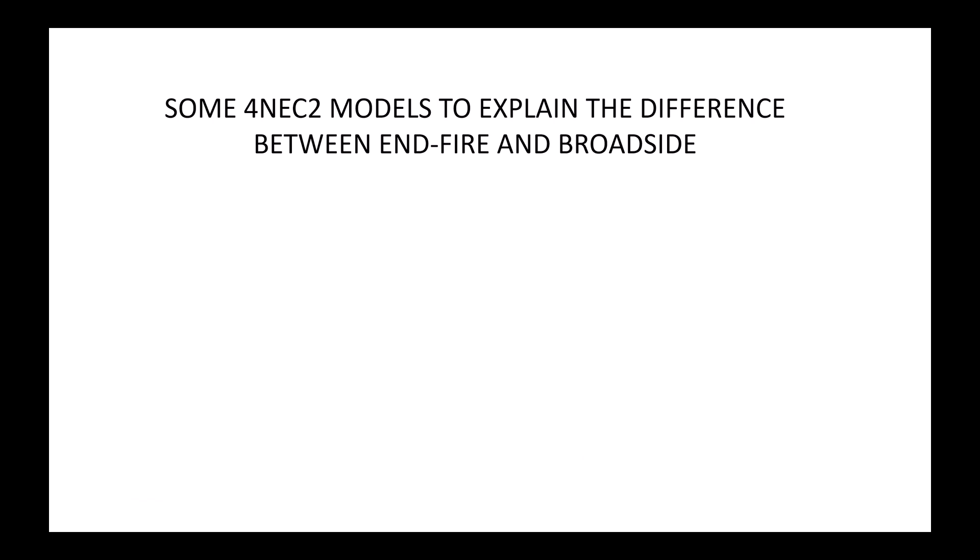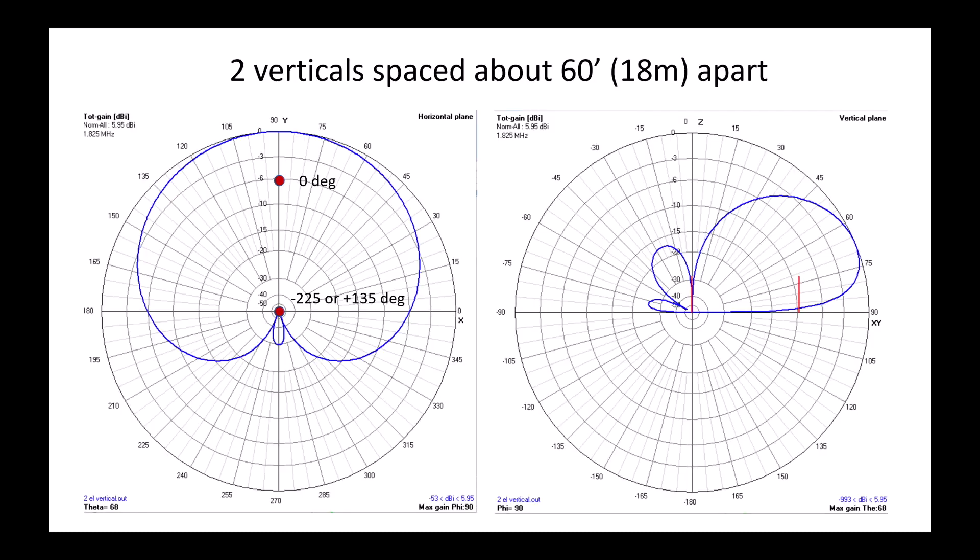Let's do some modeling in 4NEC2 to explain the difference between N-Fire and broadside arrays. In this case, all my models are on 160 meters. More correctly, I should be talking about my dimensions, especially spacing, in the context of wavelengths, but in this case I describe specific dimensions but they're all based on 160 meters.